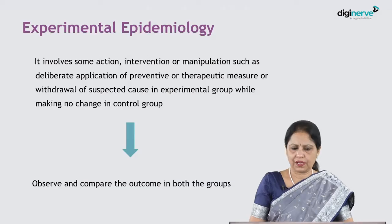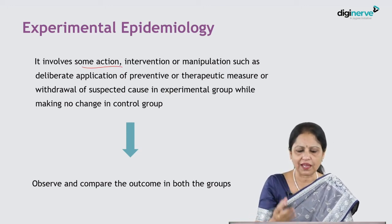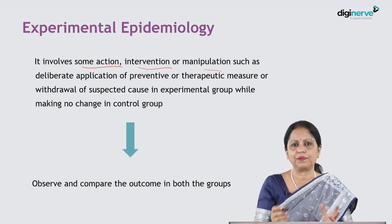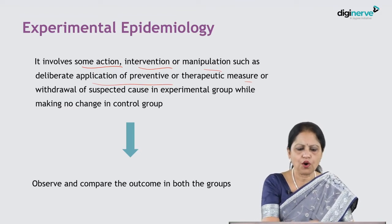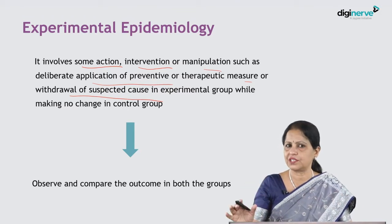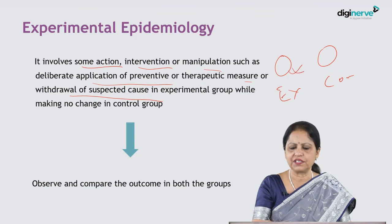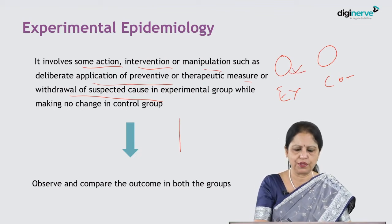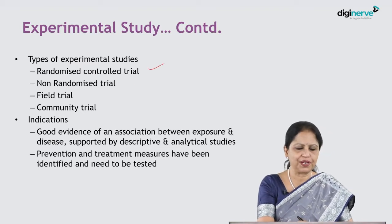Experimental epidemiology involves action experiments — some intervention or manipulation, such as deliberate application of a preventive or therapeutic measure, or withdrawal of a suspected cause in the experimental group, while no change is made in the control group. We have two groups: the experimental group receives the intervention, the control group does not. We follow them up, observe what is happening, and compare the outcomes in both groups.